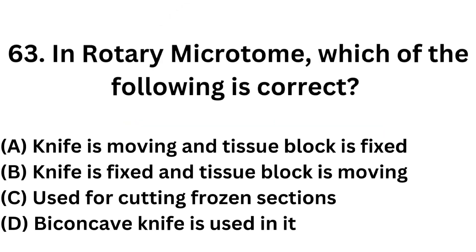Question number 63. In a rotary microtome, which of the following is correct? Option A: Knife is moving and tissue block is fixed. Option B: Knife is fixed and tissue block is moving. Option C: Used for cutting frozen sections. Option D: Biconcave knife is used in it.